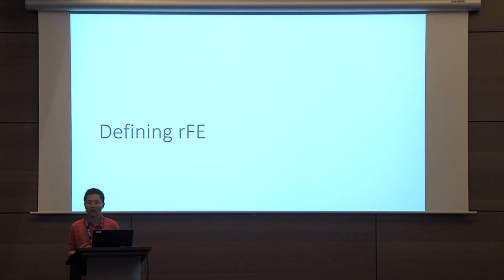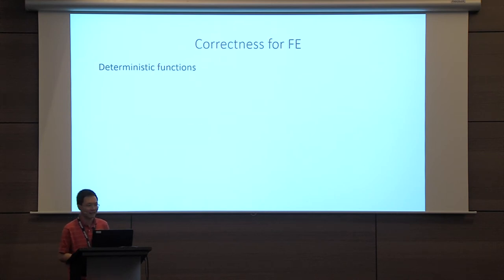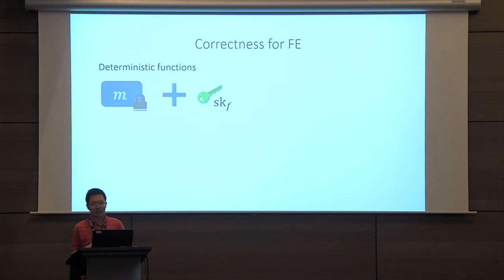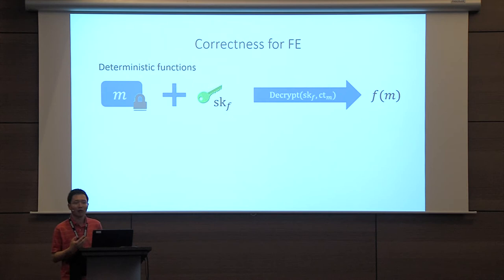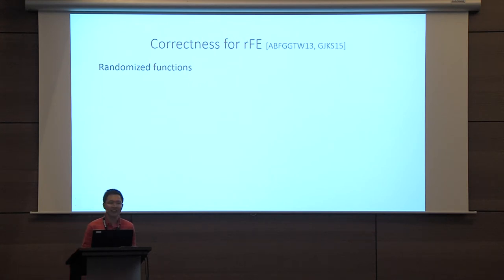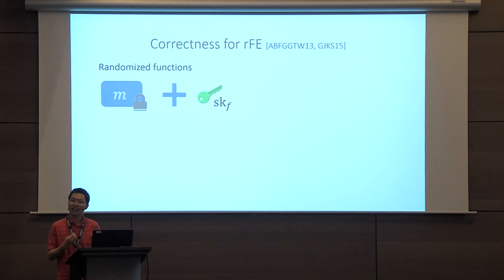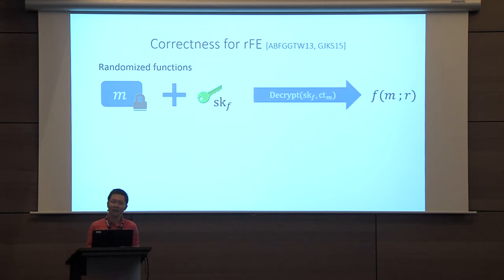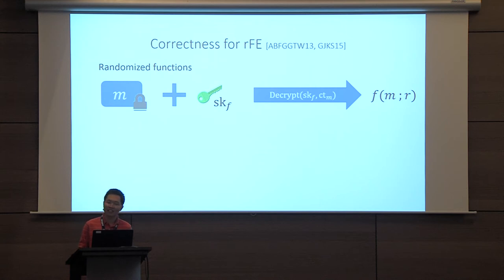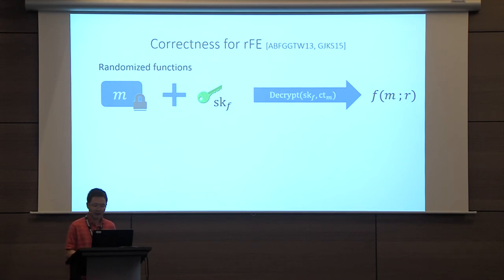Let me now define randomized functional encryption more precisely. In a deterministic FE scheme, decryption of a ciphertext encrypting message M with a key for deterministic function F outputs F of M. When we extend to randomized functionalities, if we have a ciphertext encrypting M and a key for a randomized function F, the decryption function is a deterministic algorithm that should output a random draw from the output distribution of F of M. The distribution is taken over the randomness used to encrypt and the randomness used in key generation, while the decryption operation itself is deterministic.